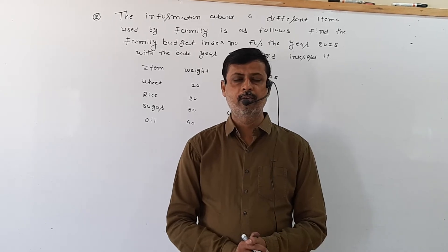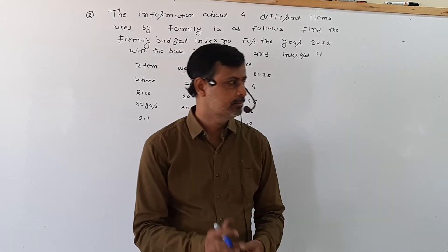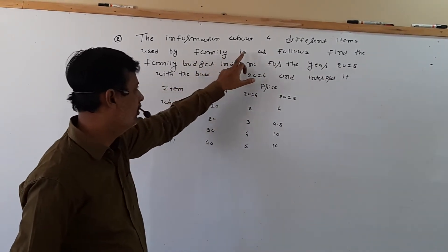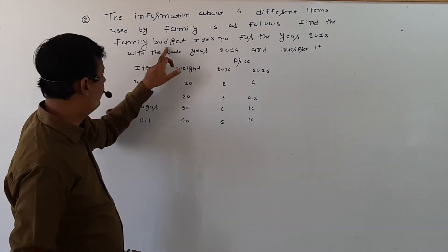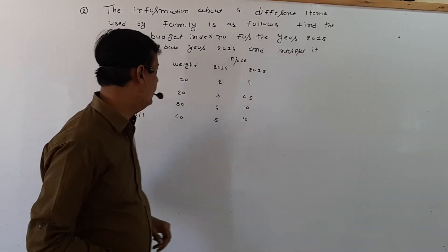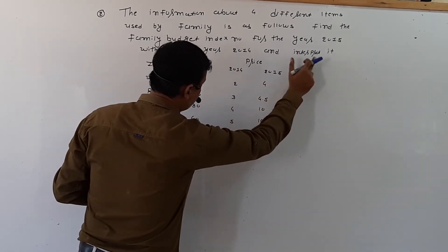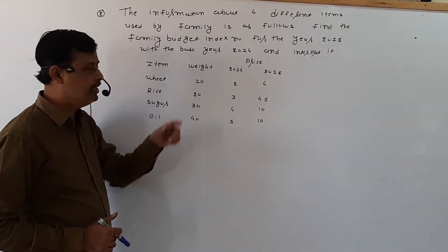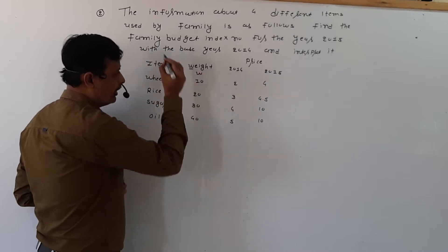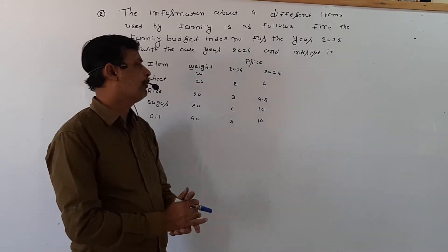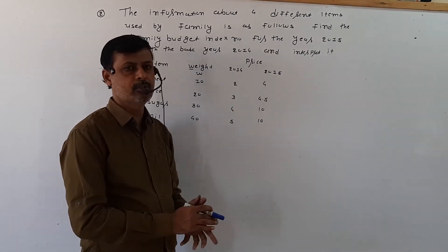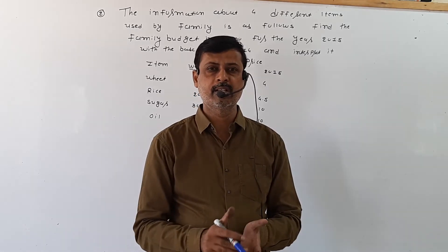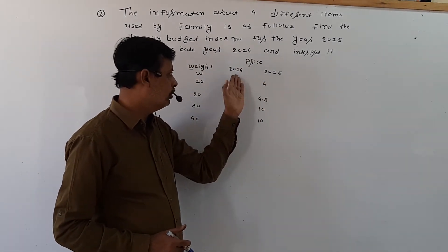In this example we will find the family budget index. The information about four different items used by a family is as follows: find the family budget index number for the year 2015 with the base year 2014. Items given are rice, sugar, and oil, along with their weights. We have two years: 2014 and 2015. Since 2014 comes first, it is our base year, and 2015 is our current year.